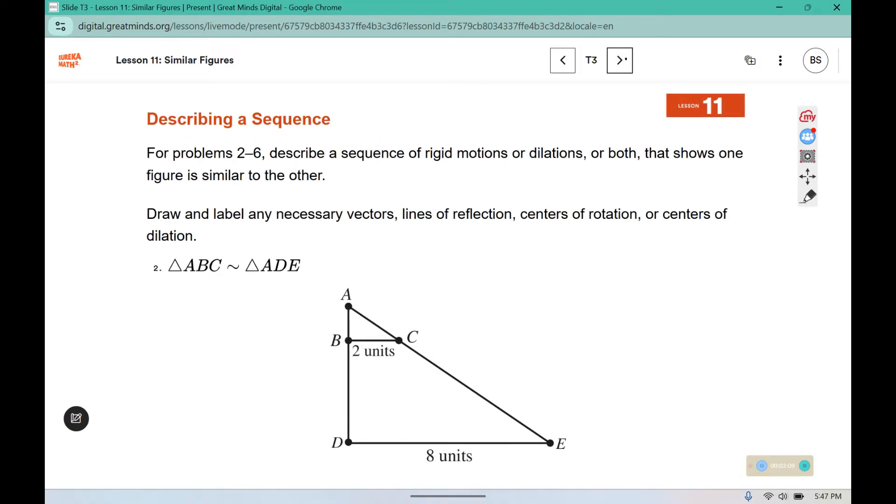For problems two through six, describe a sequence of rigid motions or dilations or a combination of both that shows one figure is similar to the other. Draw and label any necessary vectors, lines of reflection, centers of rotation, or centers of dilation.